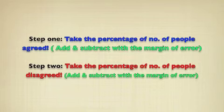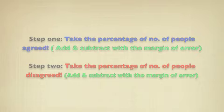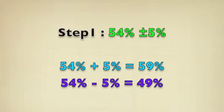The way you solve it is basically simple and involves arithmetic. Step 1: take the percentage of the number of people that agree, then add and subtract the margin of error. Step 2: take the percentage of the number of people that disagree, then add and subtract the margin of error.